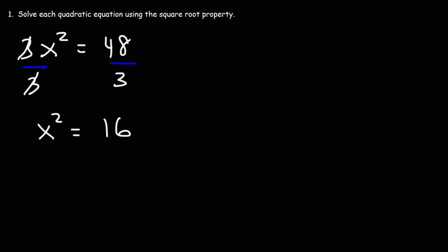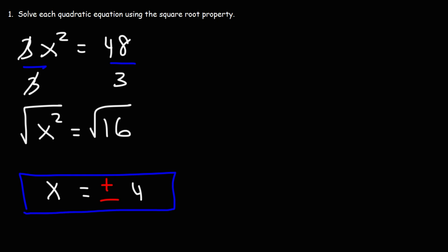Now we have x squared, but we need to get x. So what we can do at this point is take the square root of both sides. The square root of x squared is x. The square root of 16, we're going to get two answers: plus or minus 4. So x can equal positive 4 or negative 4.